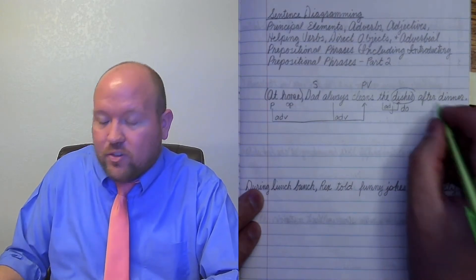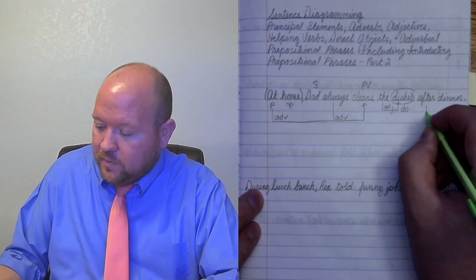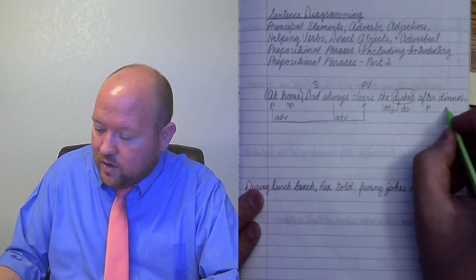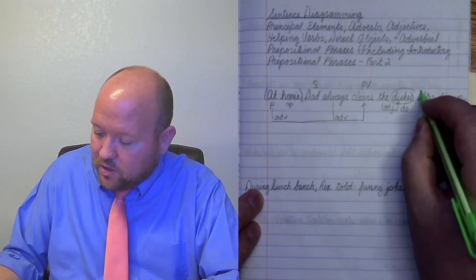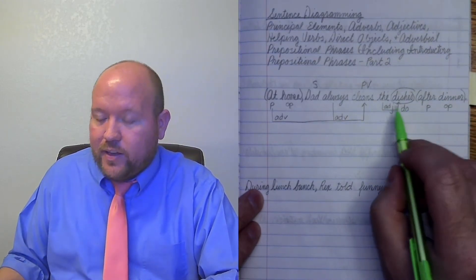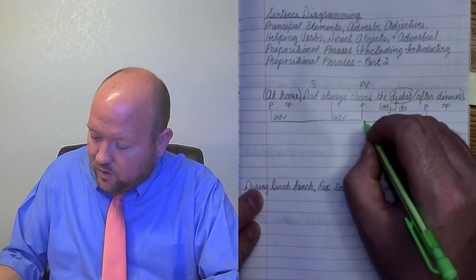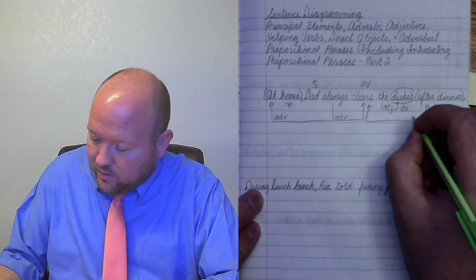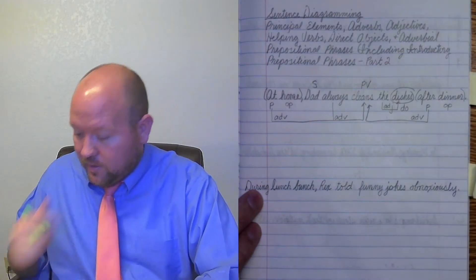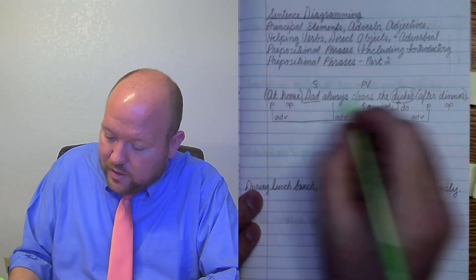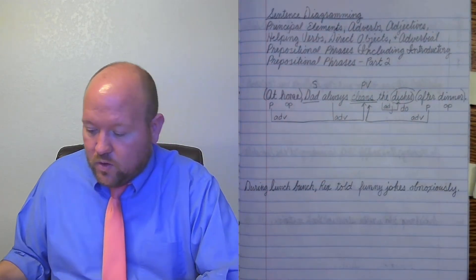And then after is what kind of word. After is a preposition and then dinner is the object of the preposition. Close that in with parentheses. And that's telling us when he does the cleaning. So I'm going to come down over and up. And that is also an adverb. Underline my subject once, underline my predicate twice.